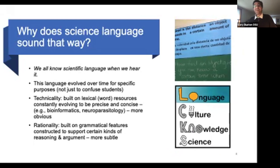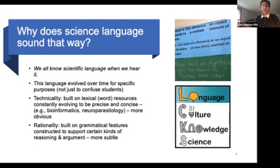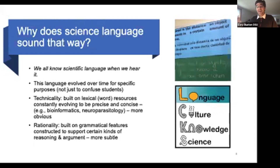Today we're focused on language, and to get us started, just thinking a little bit about the language of science and why it sounds the way it does. Everybody can sort of pick out scientific language when they hear it — kids are very good at discerning that. There are things about the language of science that really stand out, that make it very distinct and also potentially make it alienating or confusing. But really, the language of science evolved for particular purposes, and that purpose isn't to confuse kids.